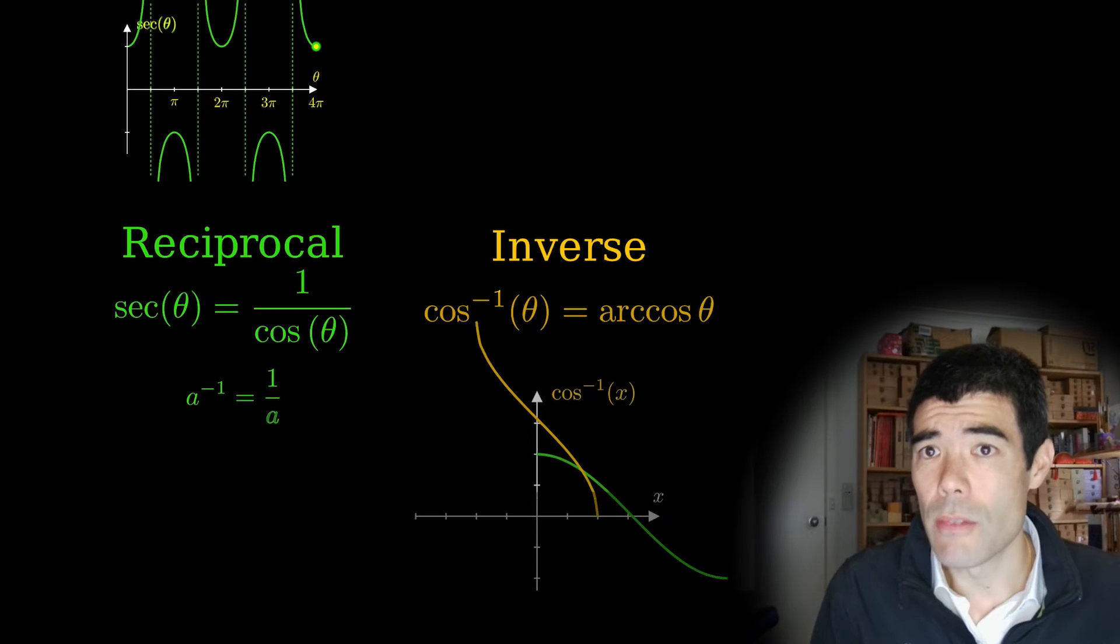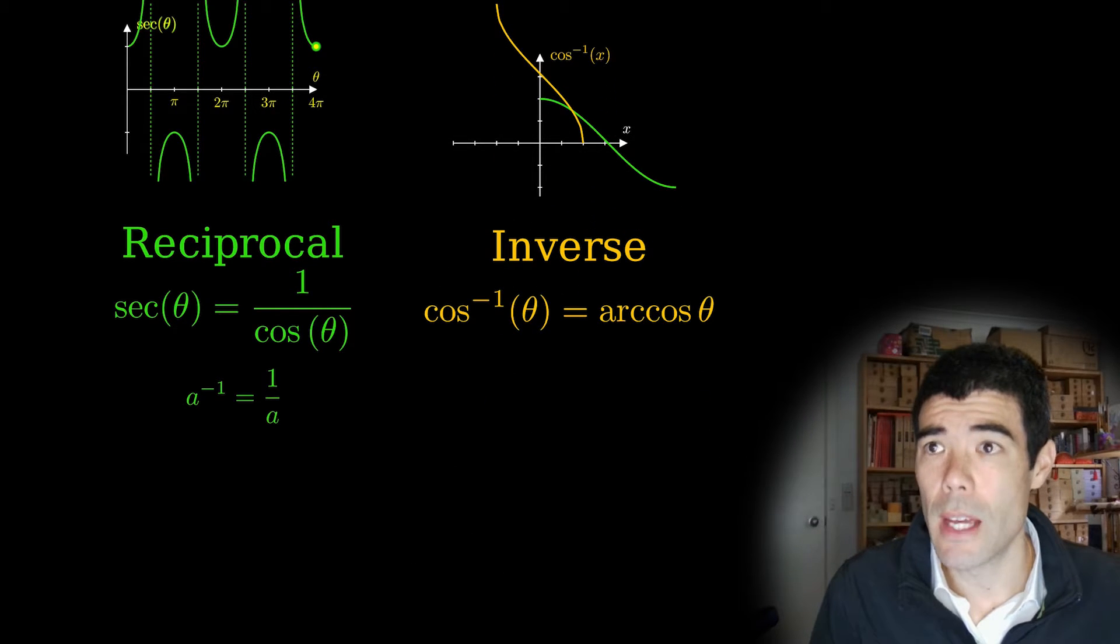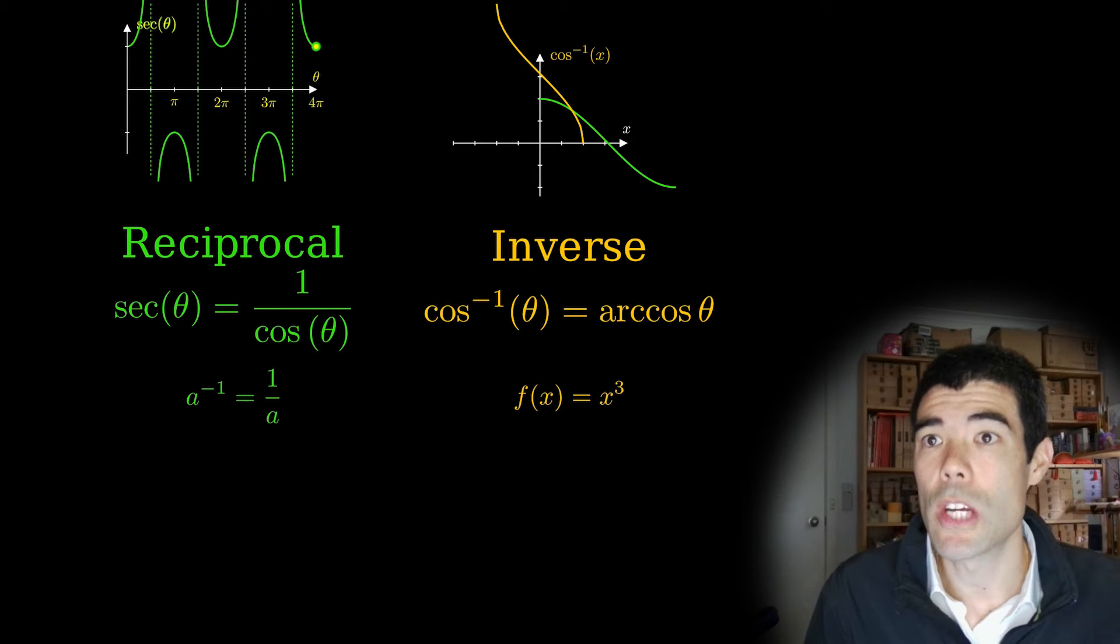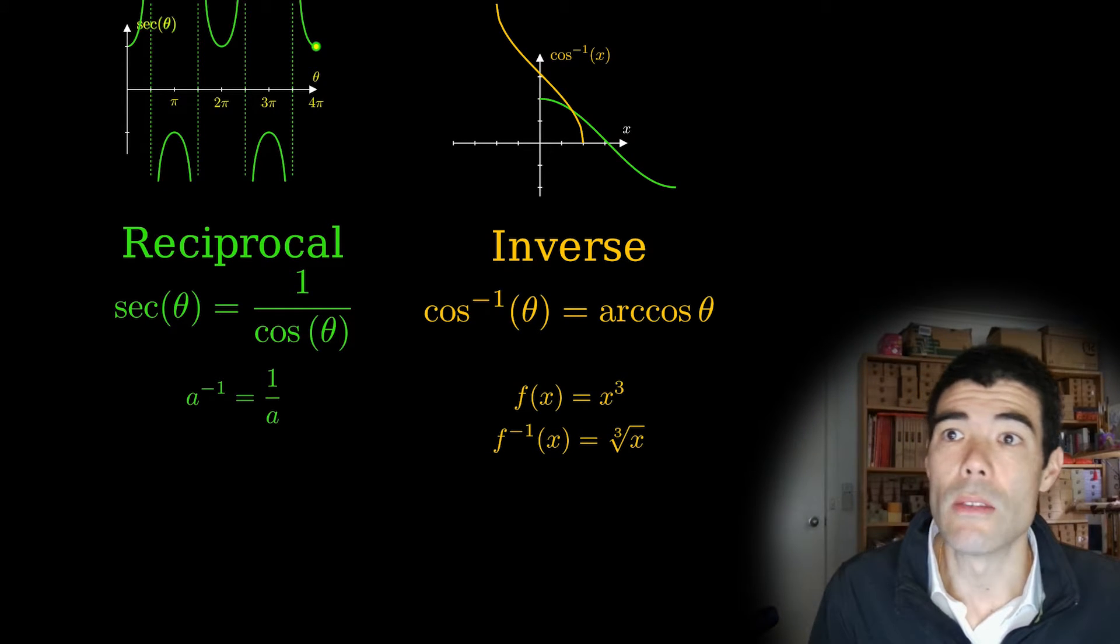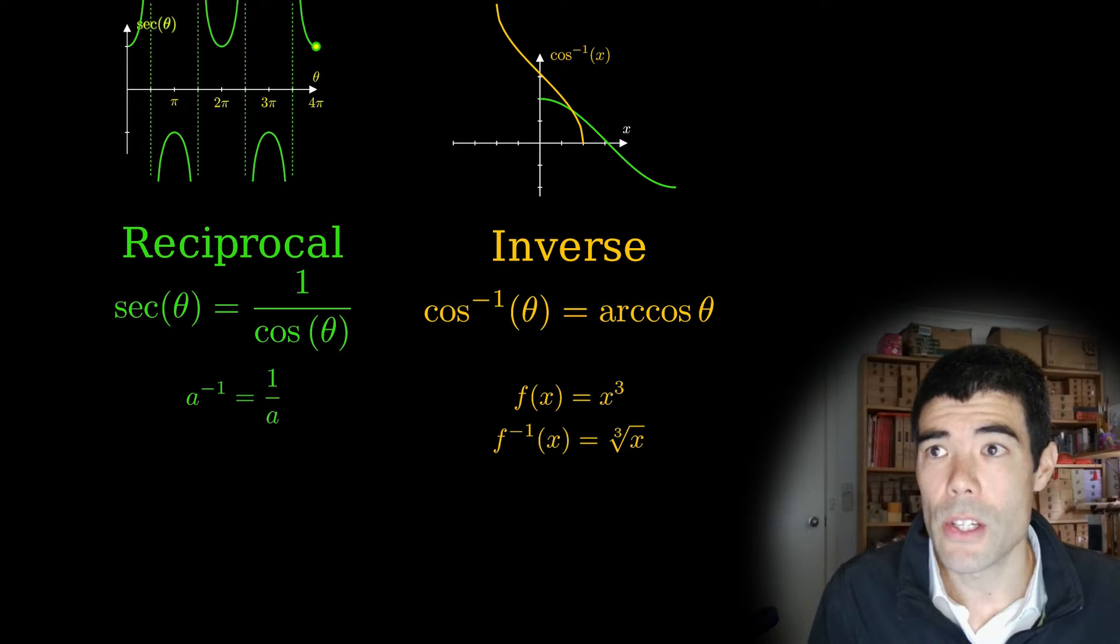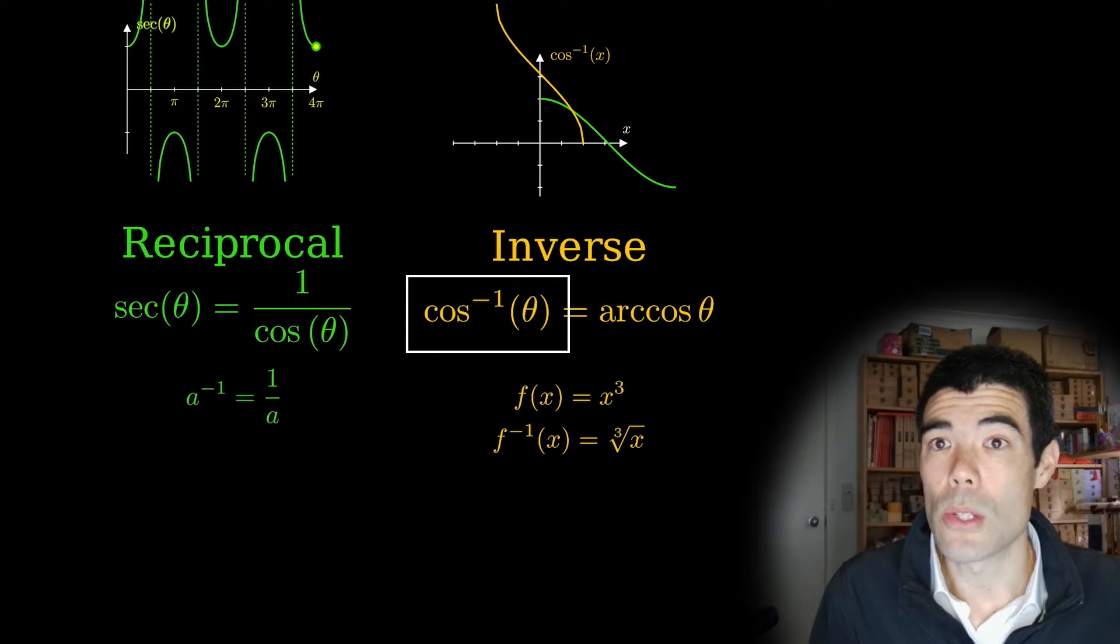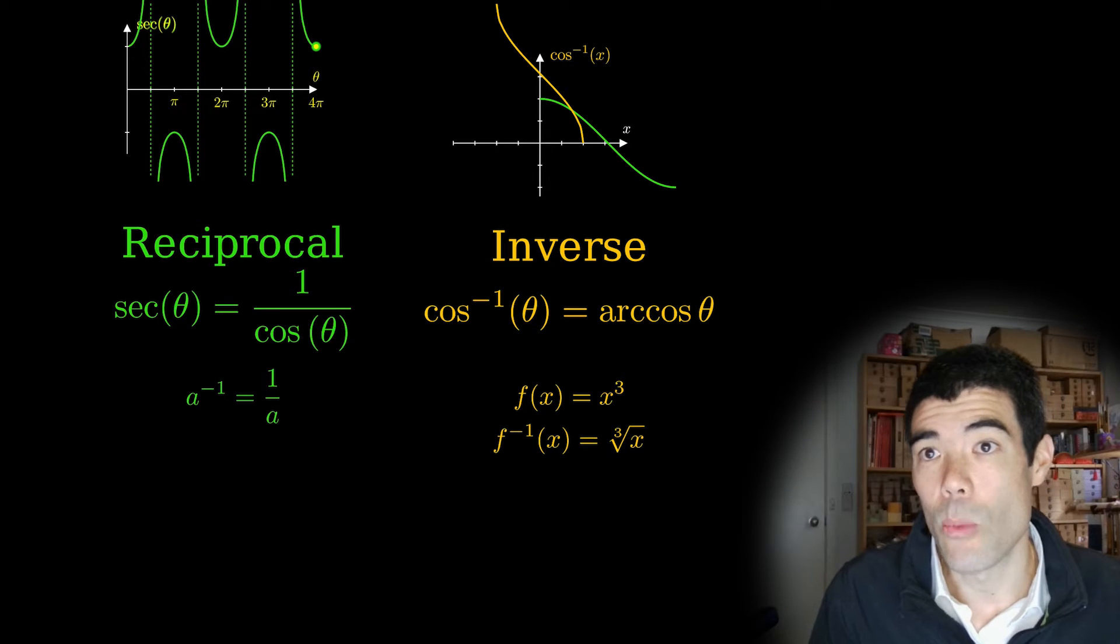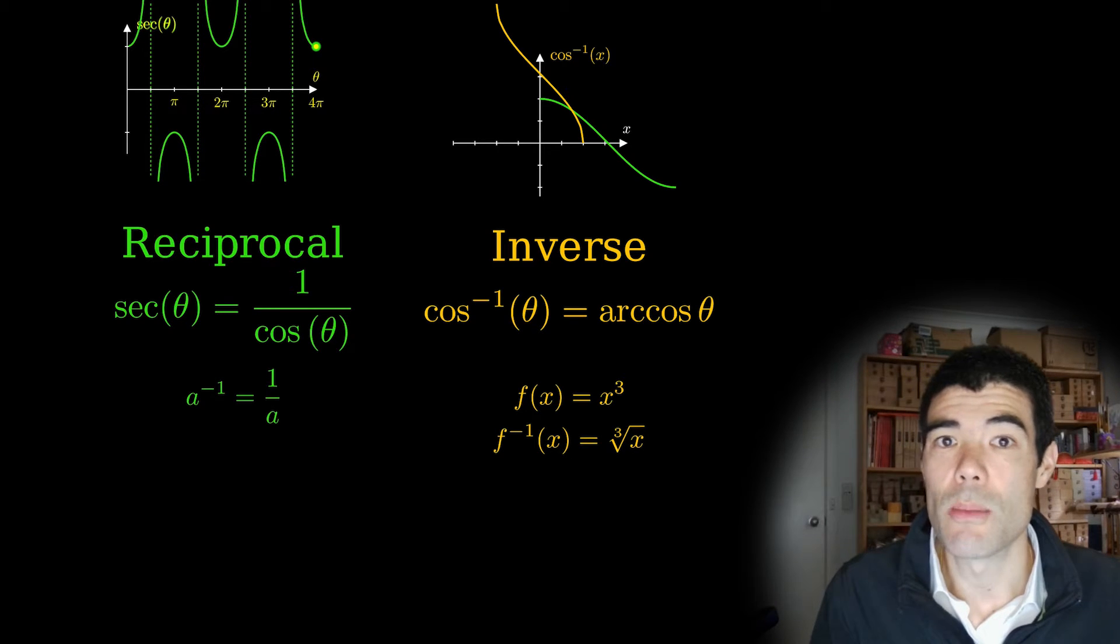But if we have a function, for example, f of x, then in that case we generally understand the f superscript negative 1 to mean the inverse. And that's the case here with the cosine as it is a function, so if we put a negative 1 superscript there, then what we mean is the inverse cosine function. If we want the reciprocal 1 over cos, we either write 1 over cos or we use the term secant or sec theta.